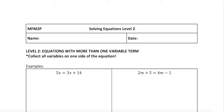Solving equations level two. In level two, we're looking at equations with more than one variable term. The thing you need to remember is that we need to collect all the variables on one side of the equation. It truly doesn't matter whether you move them to the left side or the right side. I will show you a strategy if you want to eliminate negative coefficients, but you are welcome to always move them to the left side if that's easier for you.